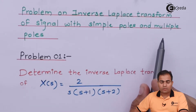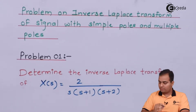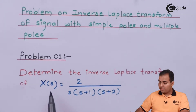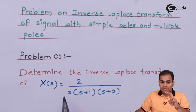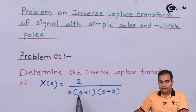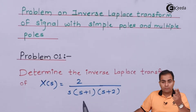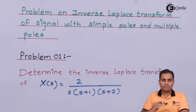Simple pole means poles on different locations. Multiple pole means on a single location we have a number of poles. If this question were related to multiple poles, then X of S would equal 2 upon S² — meaning two poles at the origin — or maybe (S+1)², meaning two poles at the minus 1 location. Similar type of questions we are going to solve later on. The current numerical is a simple pole.